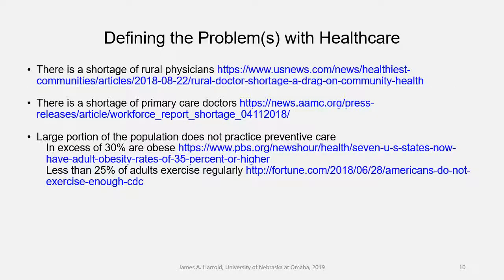Some other problems with healthcare: there's a shortage of rural physicians, and there is a shortage of primary care doctors in general — sometimes those two are linked together. Finally, a large portion of our population does not practice preventative healthcare, meaning eating right and exercising. In excess of 30% of our adult population fits the clinical definition for obesity, and less than 25% of adults exercise regularly to the extent that it actually provides cardiovascular benefits.